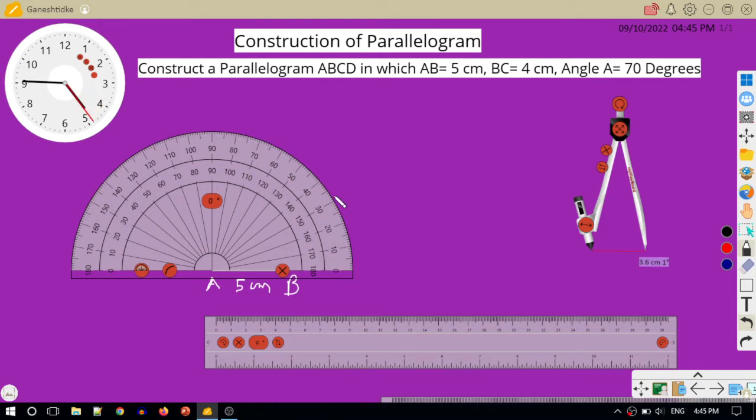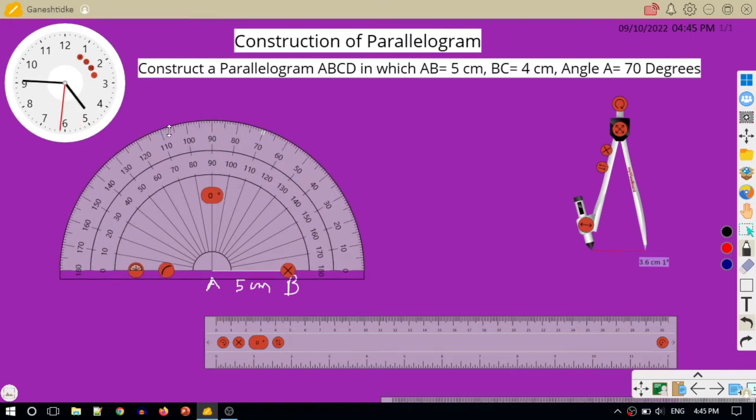So from 0, 10, 20, 30, 40, 50, 60, 70. So can you see, this is 70 degrees.